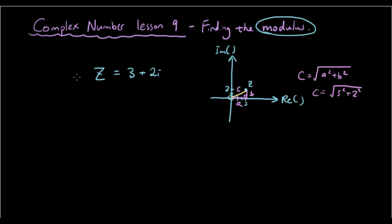So the modulus of z, which is denoted by z with two vertical lines around it, is equal to 3 squared plus 2 squared square root, which is equal to the square root of 9 plus 4, which is 13.